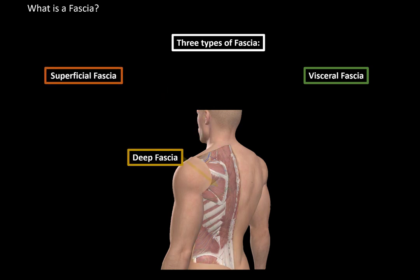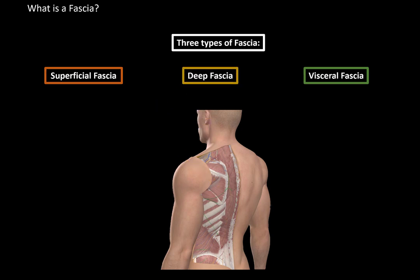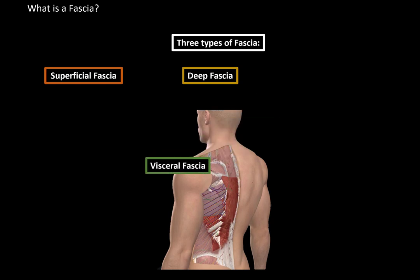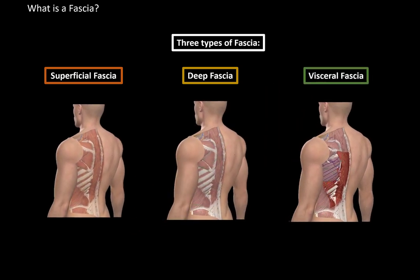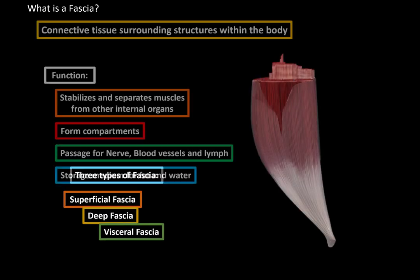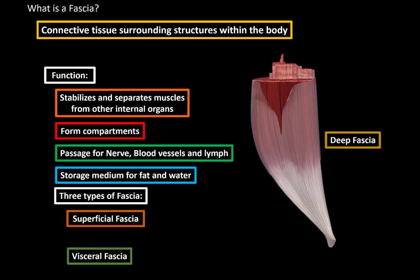The deep fascia surrounds individual muscles and groups of muscles to separate them into compartments. When we talk about fascia within the body, it's most often the deep fascia we're talking about. When you remove the deep fascia, you can see an organ and the visceral fascia that surrounds it — for example, the fascia covering the lungs, called pleura. So the fascia shown earlier was a deep fascia.